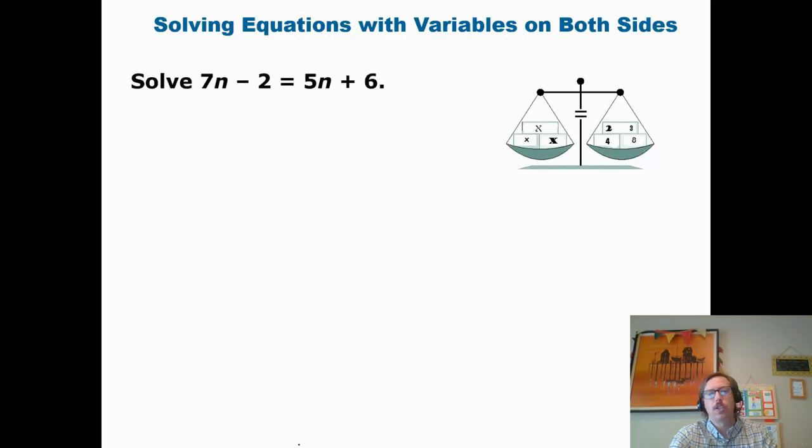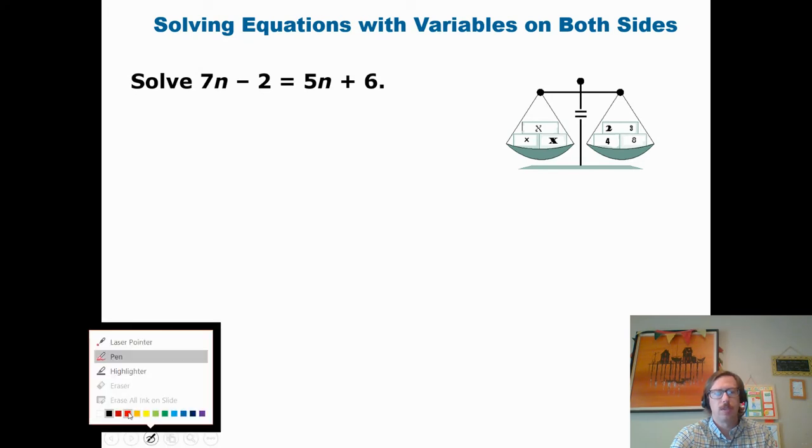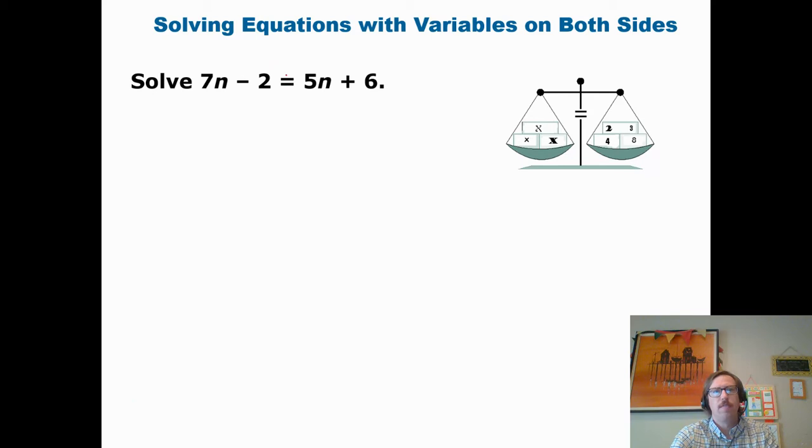So here's our example problem. We solved this in class, and I'll just give the quick rundown. The main step that's new is the very first step. The very first step is when we collect the variables. I see that 7n is here and 5n is here. It's usually easiest to move the smaller coefficient. So the smaller n is 5n. So I would subtract 5n from both sides. In this case, I draw a line, and I'm going to total up my work.